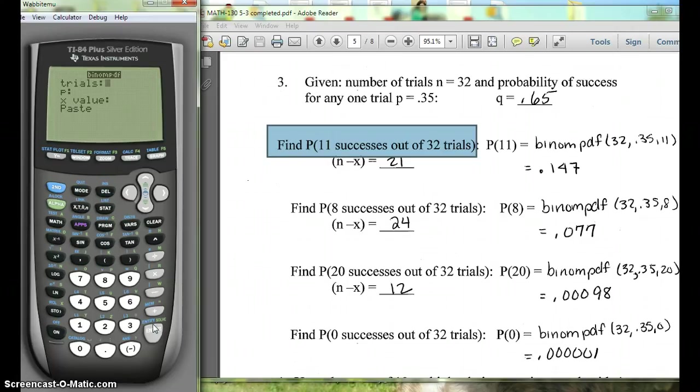So on this one it's a little different, but I'll tell you how you would do it on an 83 as well. On this one, our number of trials we would put 32, and then our P value is 0.35, and our X value is 11.